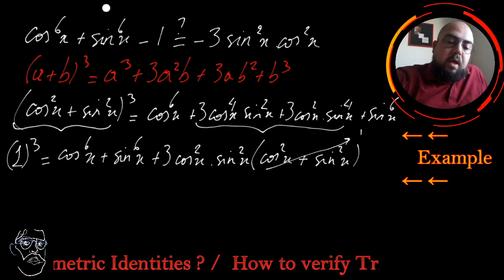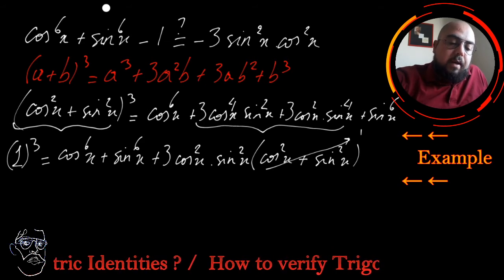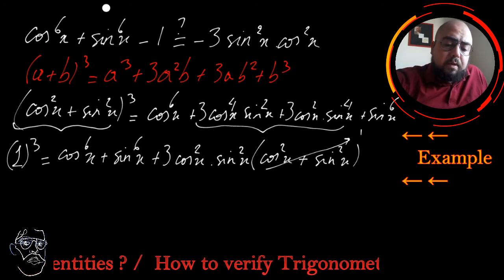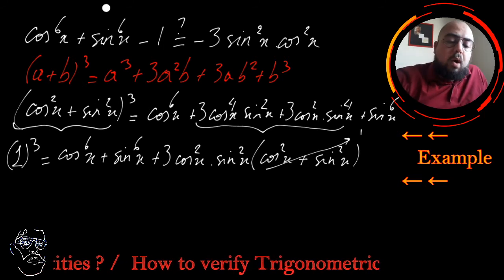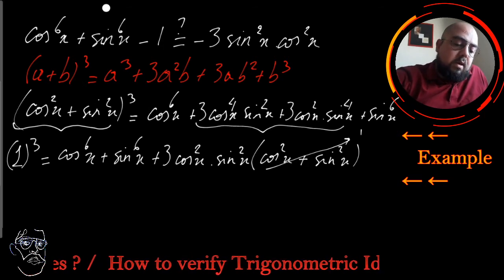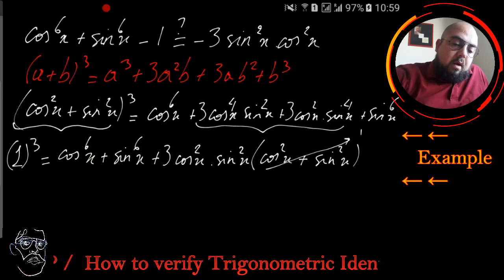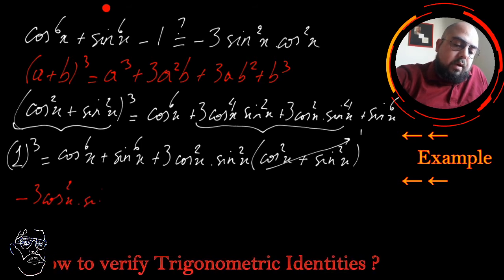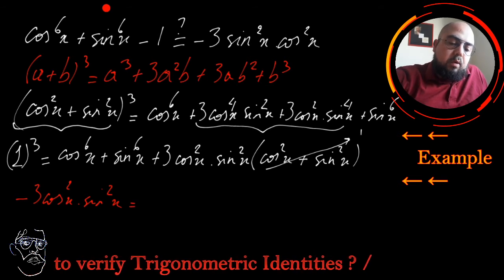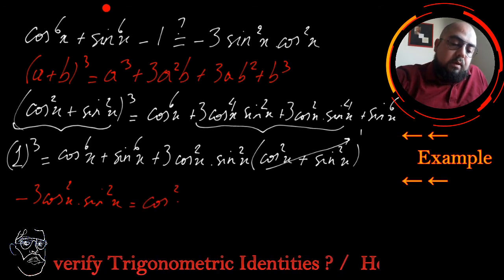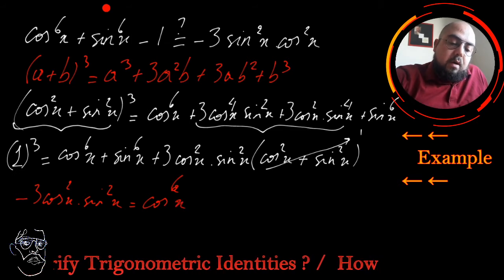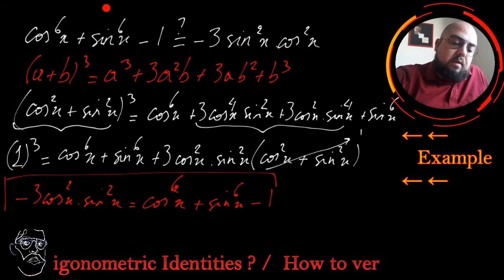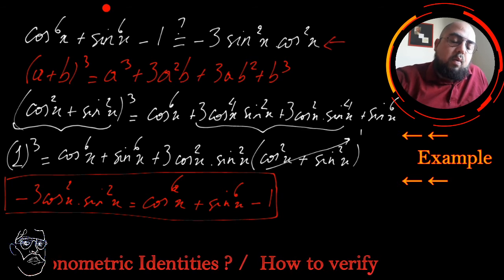So 1 equals cosine to the power of 6 plus sine to the power of 6, plus 3 cosine squared x times sine squared x. Rearranging, cosine to the power of 6 plus sine to the power of 6 minus 1 equals negative 3 cosine squared x times sine squared x. This is exactly the identity we needed to verify.